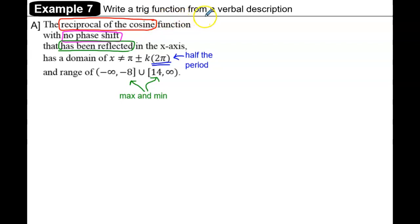Example A says the reciprocal of the cosine function with no phase shift that has been reflected in the x-axis has a domain of x ≠ π ± k(2π),